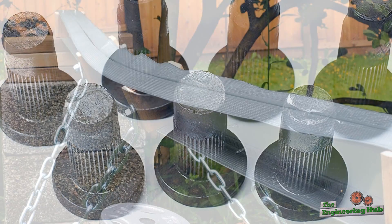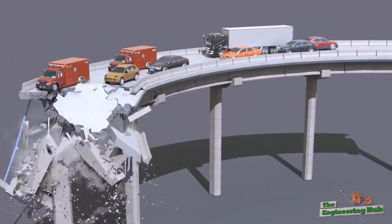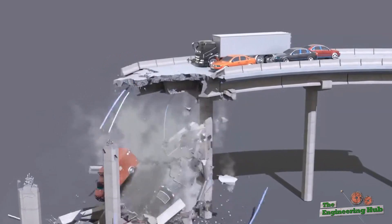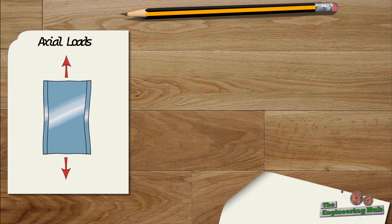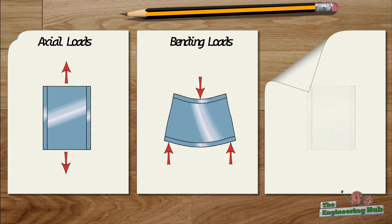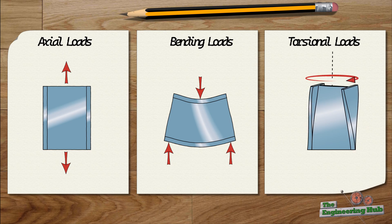Apart from fatigue and buckling, all other structural failures are caused by excessive stresses in the structural element. The stresses originate from three types of actions: axial loads, which cause stretching and compressing; bending loads, which cause curving; and torsional loads, which cause twisting of the element.